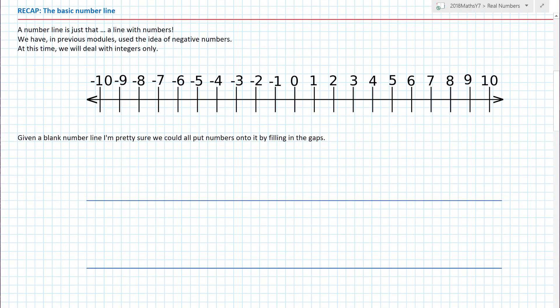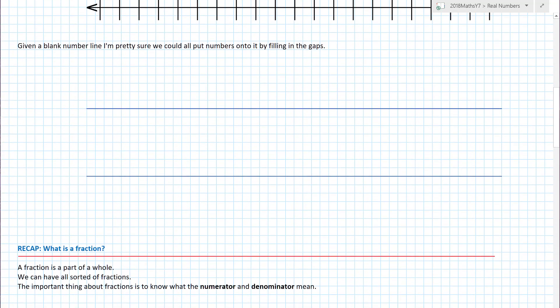So here is a basic number line. It's a line with numbers. As we have in previous modules used the idea of negative numbers, I've put them on as well. So zero is where life gets exciting. Zero is where it all started. In the beginning there was the light. Going this way, we count one, two, three, four, five, six, seven, eight, nine, ten. So negative numbers, we count this way with zero, minus one, minus two, minus three, minus four, minus five. Given a blank number line, I'm pretty sure we could all put numbers onto it by filling in the gaps.